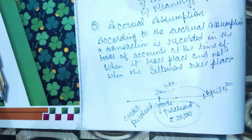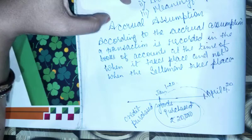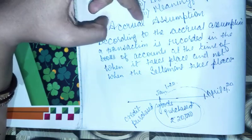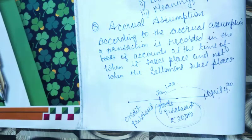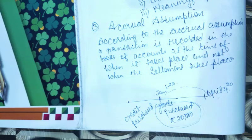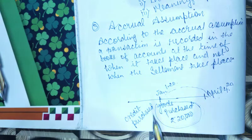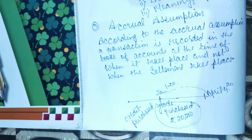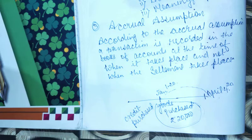There are two ways to maintain accounts: cash basis and accrual basis. Cash basis means recording only when cash payment is made. The most widely followed method is the accrual basis, which means we record transactions on the day they take place. The whole world values accrual basis and it is the accepted standard. This is because we believe that cash is not as important as the transaction itself, so we follow accrual basis.